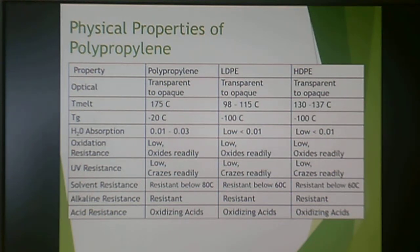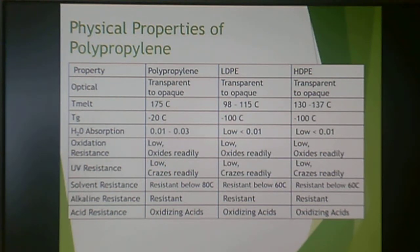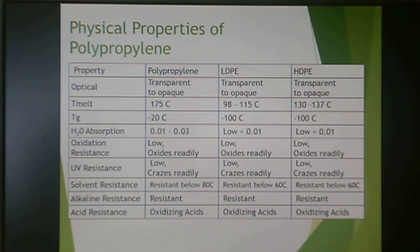Polypropylene is similar in water absorption to polyethylene and also doesn't need to be dried prior to processing. It is not good in terms of oxidation resistance or UV resistance, but tends to be solvent and alkali resistant. Oxidizing acids pose a problem, just like for low-density and high-density polyethylene — very similar in properties with the exception of temperature.